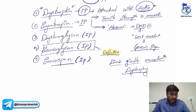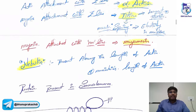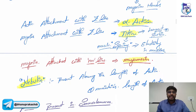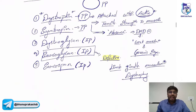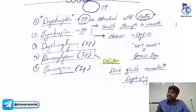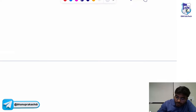Now let me explain the regulatory proteins. I have explained the structural proteins — actin, myosin, alpha-actinin, titin, myomesin, nebulin. And I've explained important proteins in the muscle cell membrane. Now let me explain some important regulatory proteins.